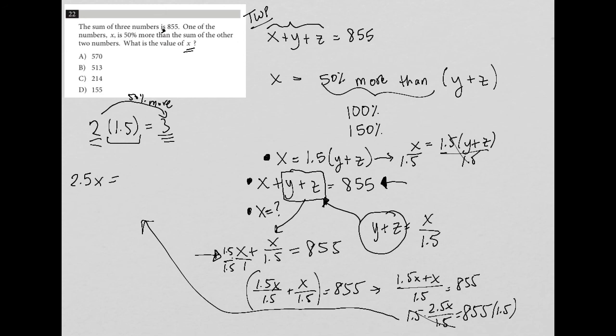855 times 1.5 equals 1,282.5. Dividing both sides by 2.5, I get x equals 513. The final answer is choice B.